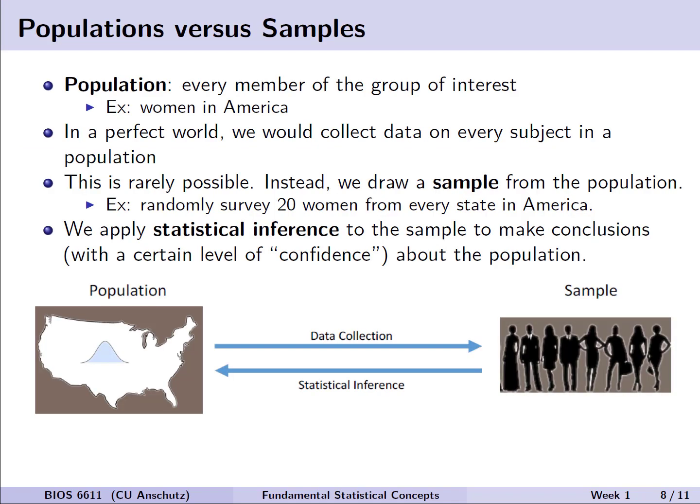A population represents the sort of highest level we possibly could get. It's every member of the group of interest. For example, that might be all women in America or just the entire country of the United States. Now, in an ideal perfect world with unlimited resources we would collect data on every subject in the population.